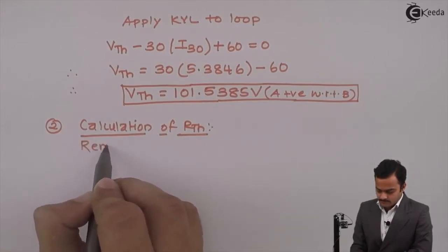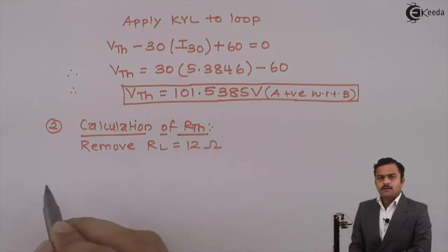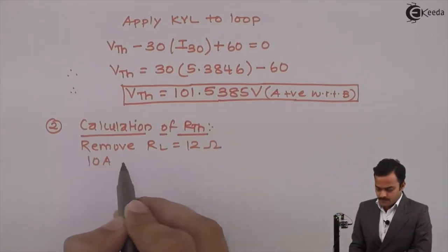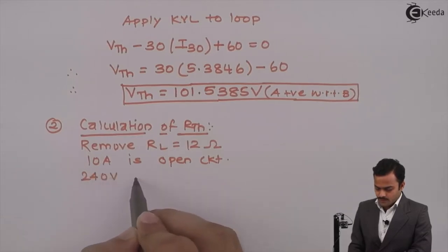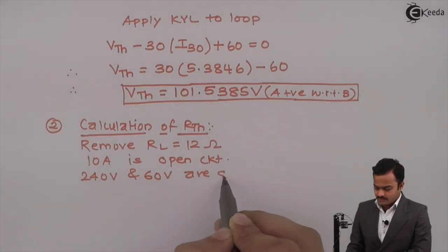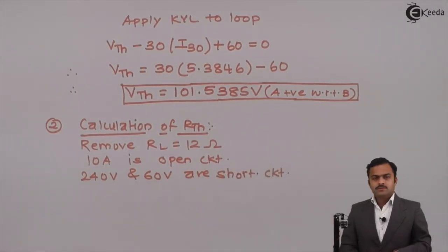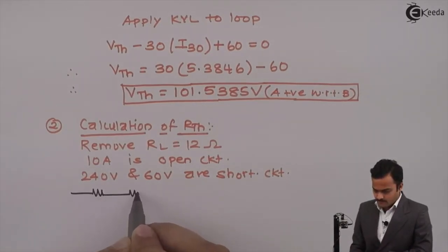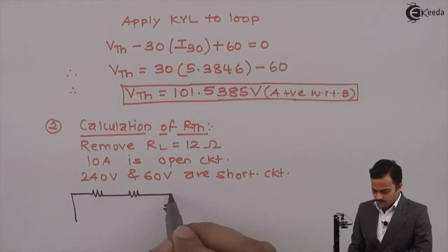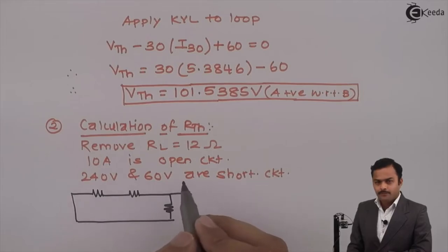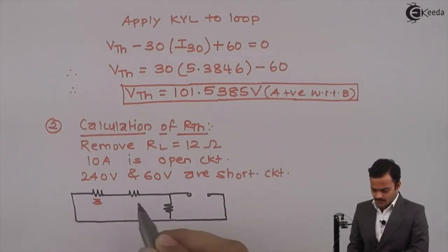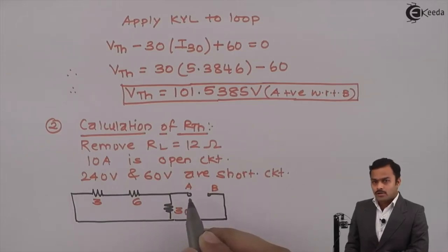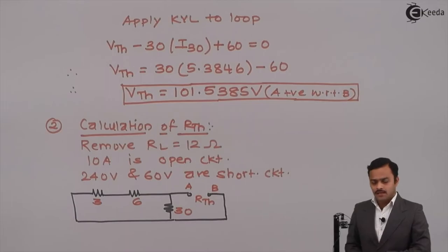For this, let us remove RL which is 12 ohm. Current source is present of 10 ampere that needs to be open circuited and 2 voltage sources are given 240 volt and 60 volt need to be short circuited. I will get a circuit like this. 240 shorted, 10 ampere open, 60 shorted. Here it is 3 ohm, 6 ohm and 30 ohm leaving behind A and B terminals across which we have to find out RTH by using series parallel combination.